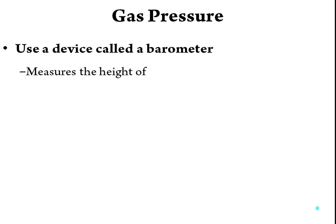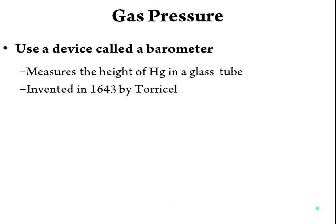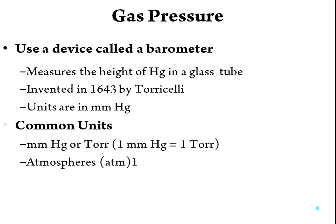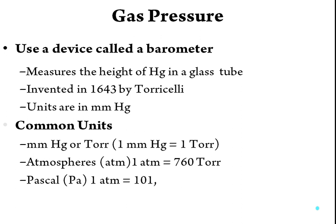Gas pressure is measured using a device called a barometer, which measures the height of mercury in a glass tube. It was invented in 1643 by Torricelli. Units used are mmHg or torr — 1 mmHg equals 1 torr. One atmospheric pressure equals 760 torr. Another unit is Pascal: 1 atmospheric pressure equals 101,325 Pa.